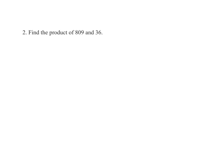Find the product of 809 and 36. Finding the product tells us that we have to multiply 839 with 36. That is, we write 809 times 36.